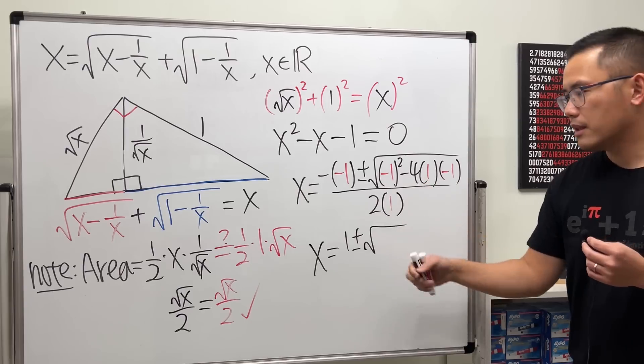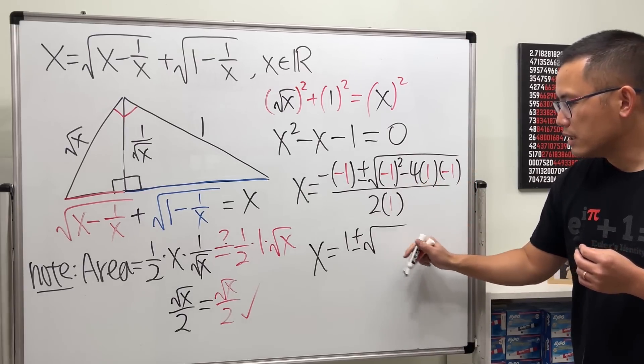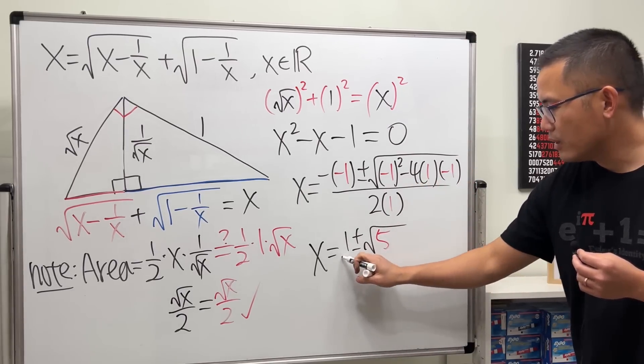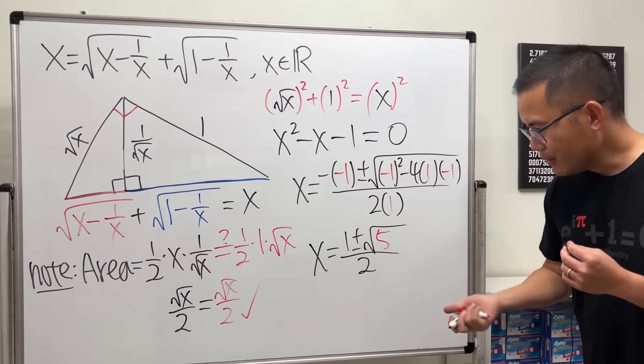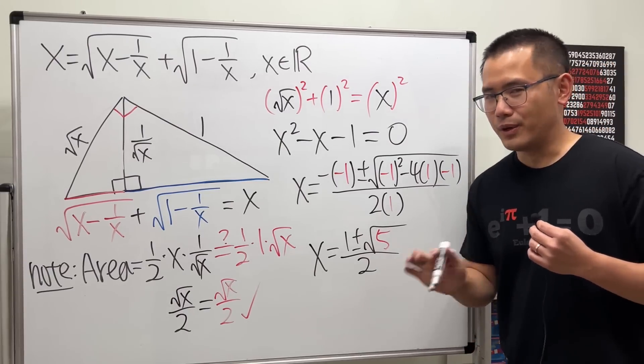So we have √5 over 2. Okay, so that's it. Well, no, not yet.